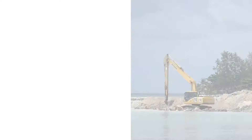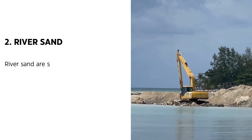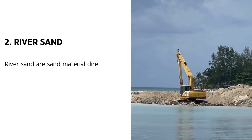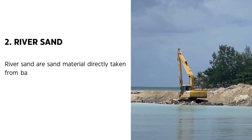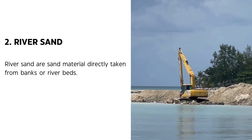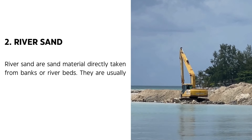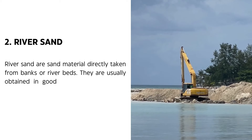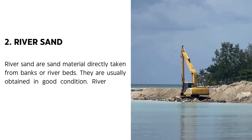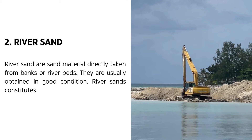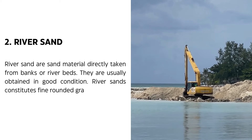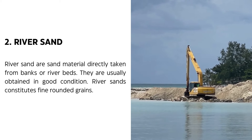2. River Sand. River sand is sand material directly taken from banks or riverbeds. They are usually obtained in good condition. River sands constitute fine, rounded grains.